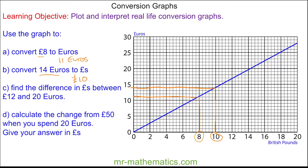For question C, we're going to find the difference in Pounds between £12 and 20 Euros. So we're going to convert the 20 Euros into Pounds. We'll go across to the blue line again from 20 Euros, then go down to the Pounds axis, and you can see this is 14 pounds. So the difference between 12 pounds and 14 pounds is 2 pounds.